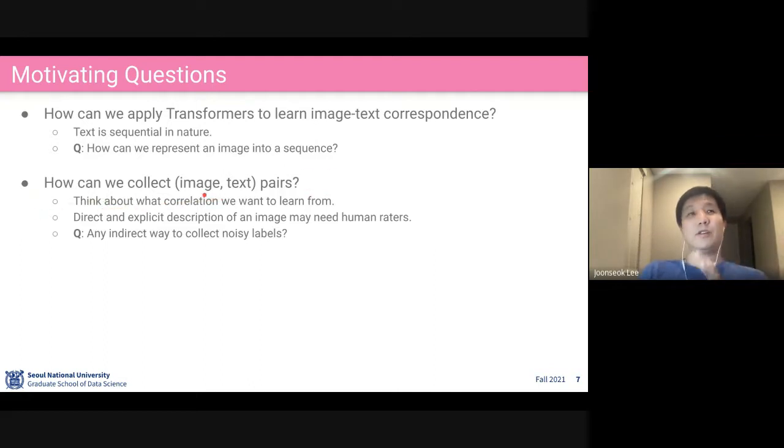How can we collect the image text pairs? In BERT, we use two sentences as training data, and we knew they are relevant to each other by how we sampled them in the corpus. Then how can we collect image text pairs which are relevant to each other? Think about some correlations that we'd like to learn from.